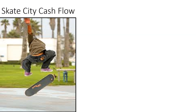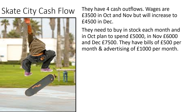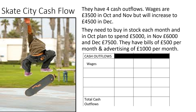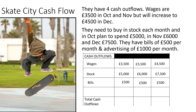Now we look at their cash outflows — they have four: wages, stock, bills and advertising. Wages are £3,500 in October and November, increasing to £4,500 in December. They buy stock each month: £5,000 in October, £6,000 in November, £7,500 in December. Bills are £500 a month and advertising is £1,000 a month — both stay the same. Totalling up the cash outflows: October £10,000, November £11,000 and December £13,500.